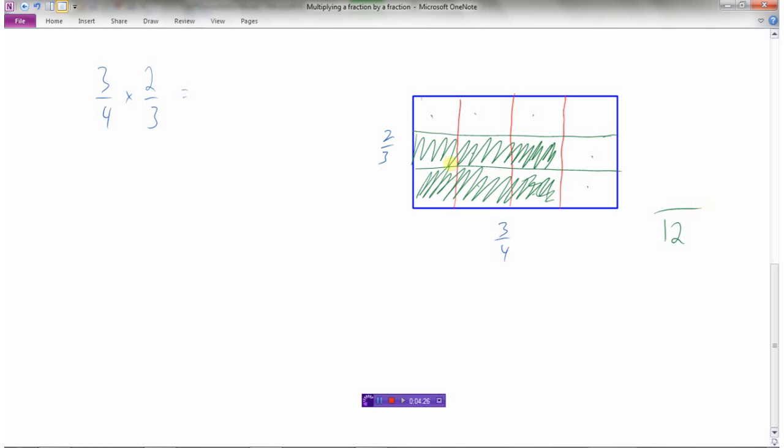And I have shaded one, two, three, four, five, six. So three-quarters times two-thirds is six-twelfths.